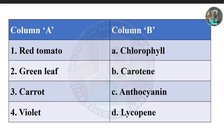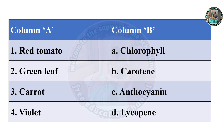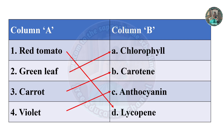Question 5: Match the column. Select the correct option. Column A: red tomato, green leaf, carrot, violet. Column B: anthocyanin, lycopene. The right answers are: red tomato — lycopene; green leaf — chlorophyll; carrot — carotene; violet — anthocyanin.